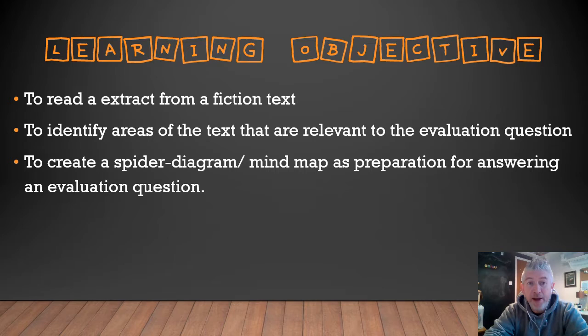So the objectives as usual: we're going to read an extract from a fiction text — just a short clip from a longer story. We're going to identify areas of the text that are relevant to the evaluation question, finding those three or four things that are really useful to answer the question.